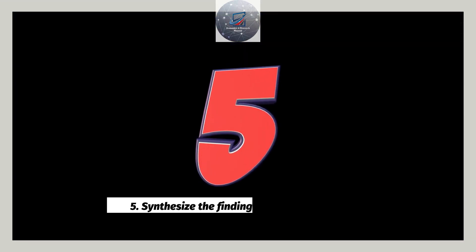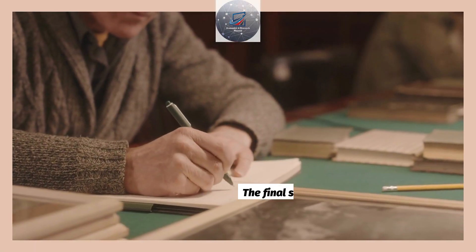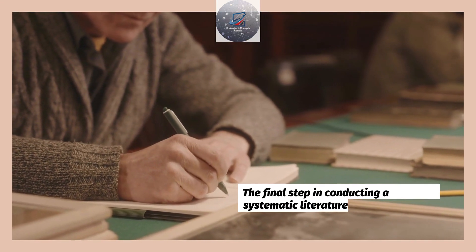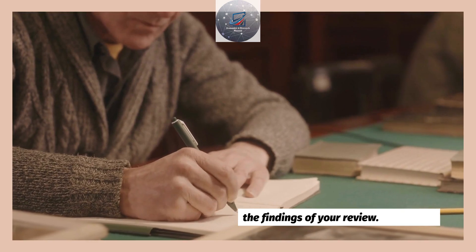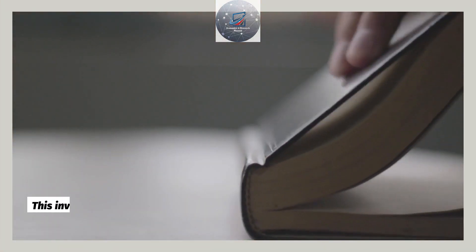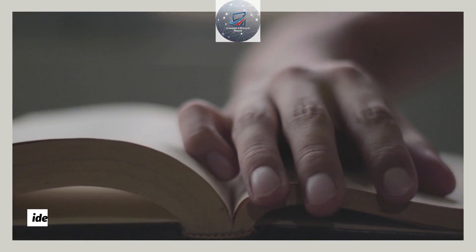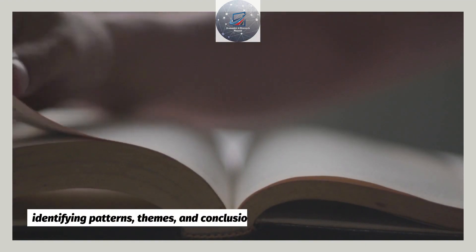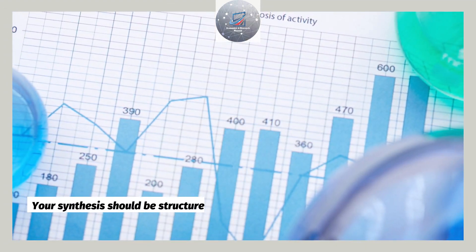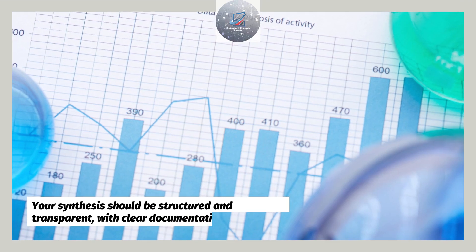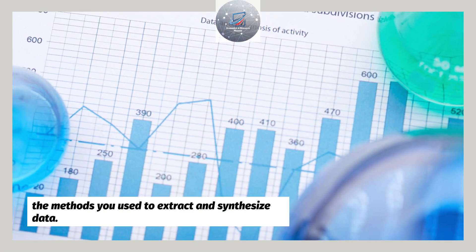5. Synthesize the findings of your literature review. The final step in conducting a systematic literature review is to synthesize the findings of your review. This involves analyzing the data you have extracted from relevant articles and identifying patterns, themes, and conclusions. Your synthesis should be structured and transparent, with clear documentation of the methods you use to extract and synthesize data.